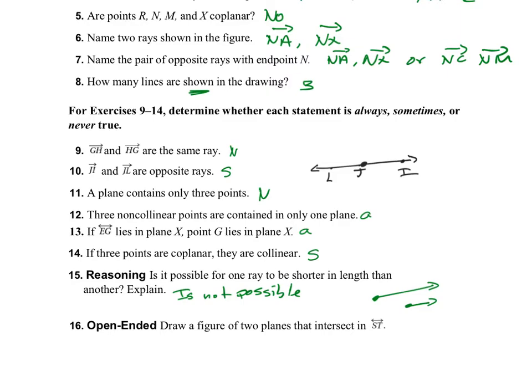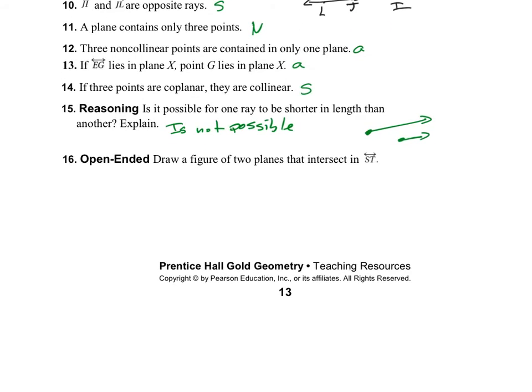Draw a figure of two planes that intersect at line ST. So I'm going to draw two planes intersecting, with point S and point T marking that line of intersection. So these are two planes that intersect at line ST — not at a point.